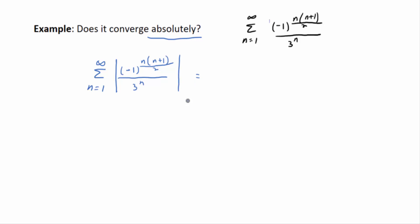Remember, absolute value splits over multiplication and division — not over addition and subtraction. Because this is a division problem, you can break it up as the absolute value of the numerator over the absolute value of the denominator. The denominator 3^n is positive, so its absolute value is just 3^n. The numerator (-1) to that power has absolute value 1. So the sum reduces to the sum from n=1 to infinity of 1 over 3^n.